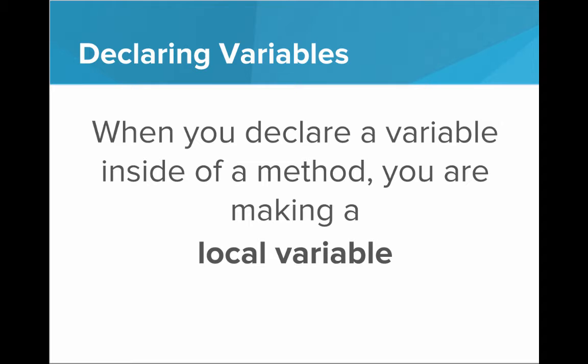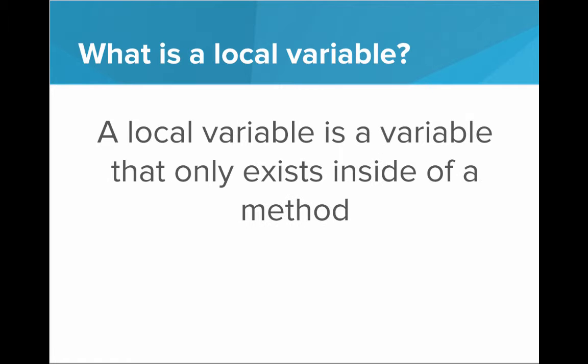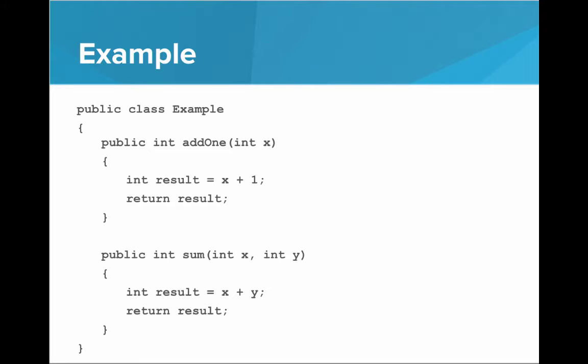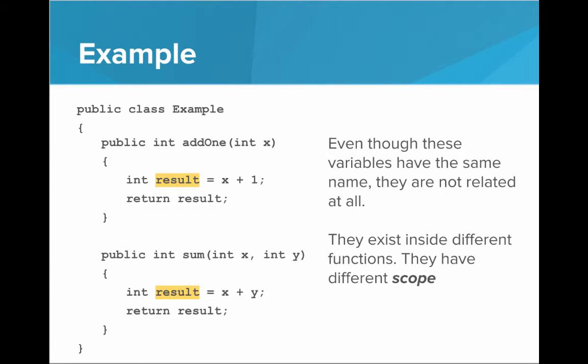When you declare a variable inside a method, you are making a local variable. A local variable is a variable that only exists inside of a certain method. That variable is local to that method and does not exist in any other method. For example, in this class we see that there are two methods with a variable called results. Even though these variables have the same name, they are not related at all — they exist inside different functions, so they have different scope.